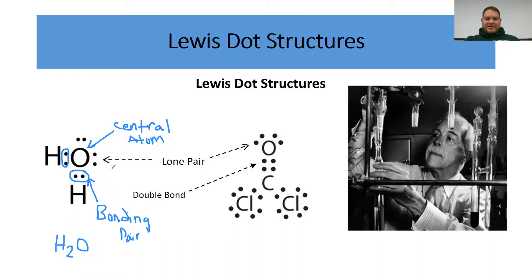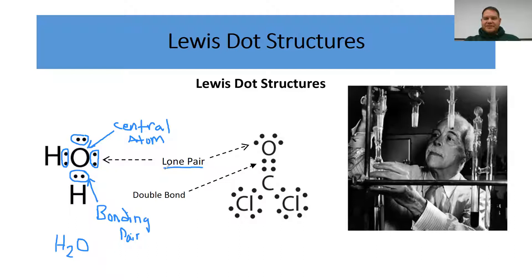The other pairs of electrons are the non-bonding pairs, also known famously as lone pairs of electrons. We will use the term 'lone pair' quite often when describing molecular structure. To have a complete and correct Lewis structure, you must indicate both the lone pairs — the non-bonding pairs — as well as the bonding pairs.